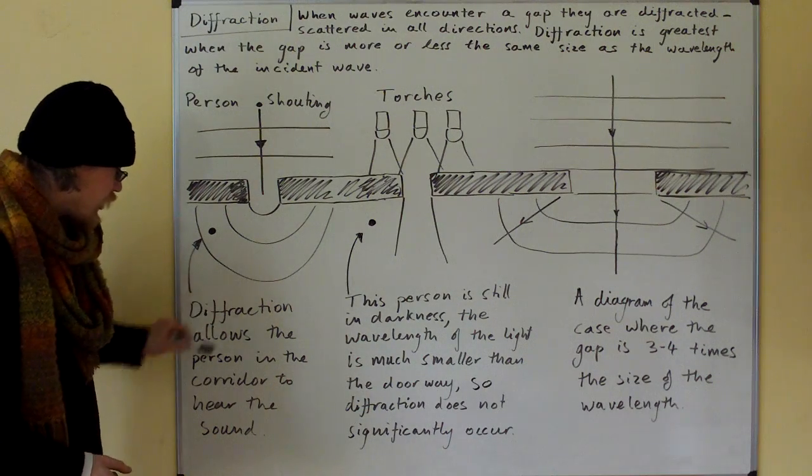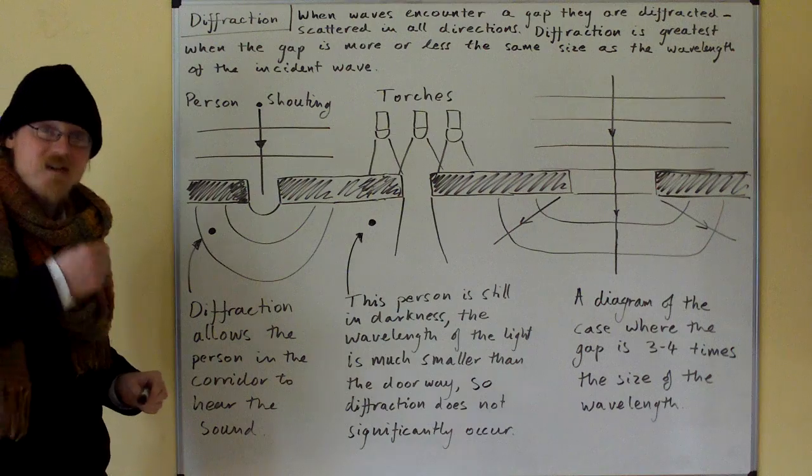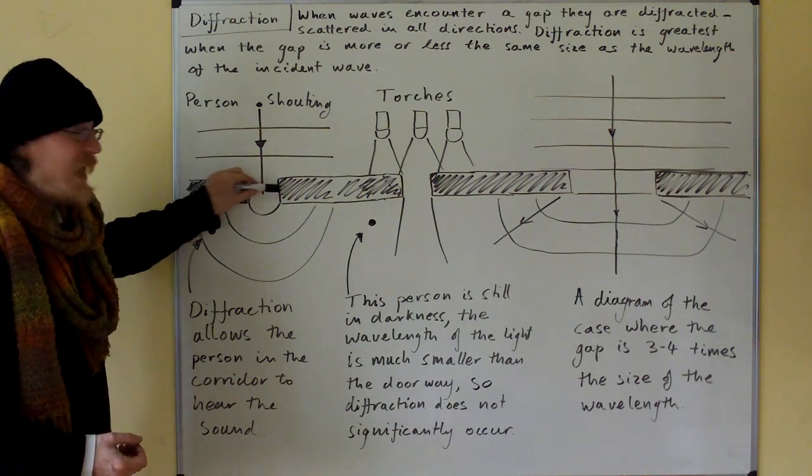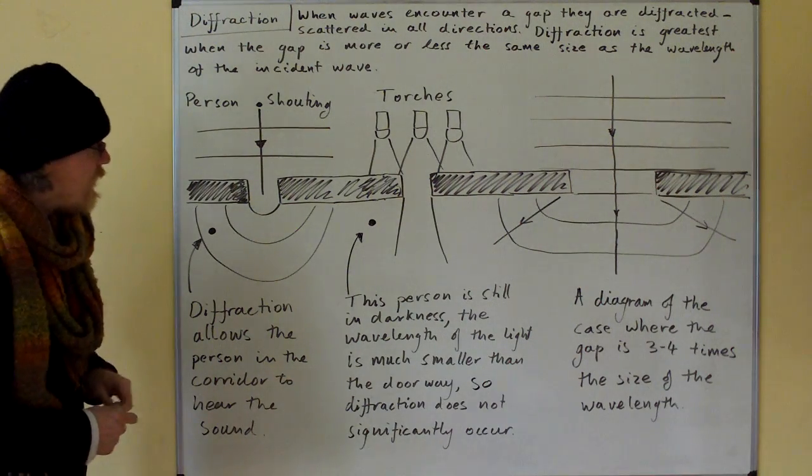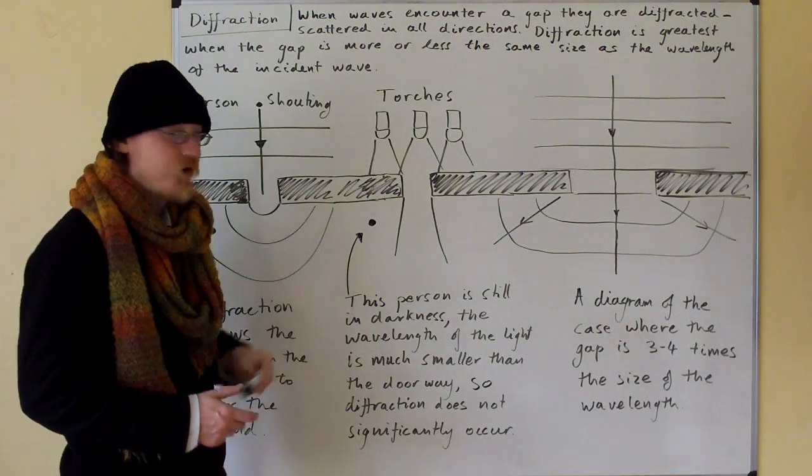Diffraction allows the person in the corridor to hear the sound because the wavelength is very similar to the width of the gap. Now here we have three torches and they are shining light towards the doorway.